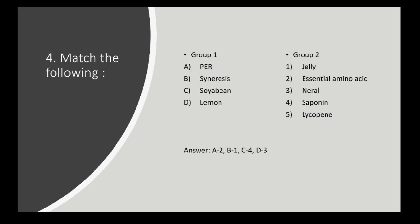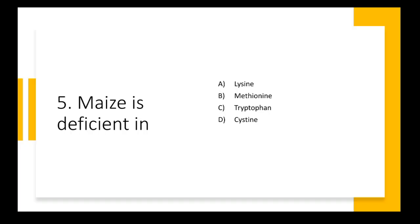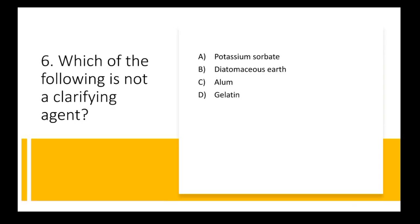Next question: maize is deficient in which of the following? Options are lysine, methionine, tryptophan, and cysteine. As discussed earlier, cereals are incomplete proteins lacking some essential amino acids. The right answer is options A and C — maize is deficient in lysine and tryptophan.